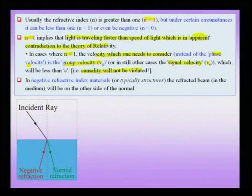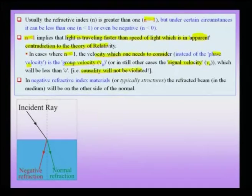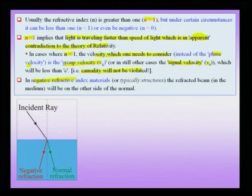Einstein's postulate is correct — c is the fundamental constant beyond which no signal can be sent. Even though n may be less than 1, implying an electromagnetic wave speed in the medium greater than c, this does not violate causality; information cannot be transmitted faster than c. We will not discuss n<1 materials such as Bose-Einstein condensates where light has been slowed or speeded up, but we will briefly take up what are known as negative refractive index materials, which are actually typically structures rather than materials in the conventional sense.